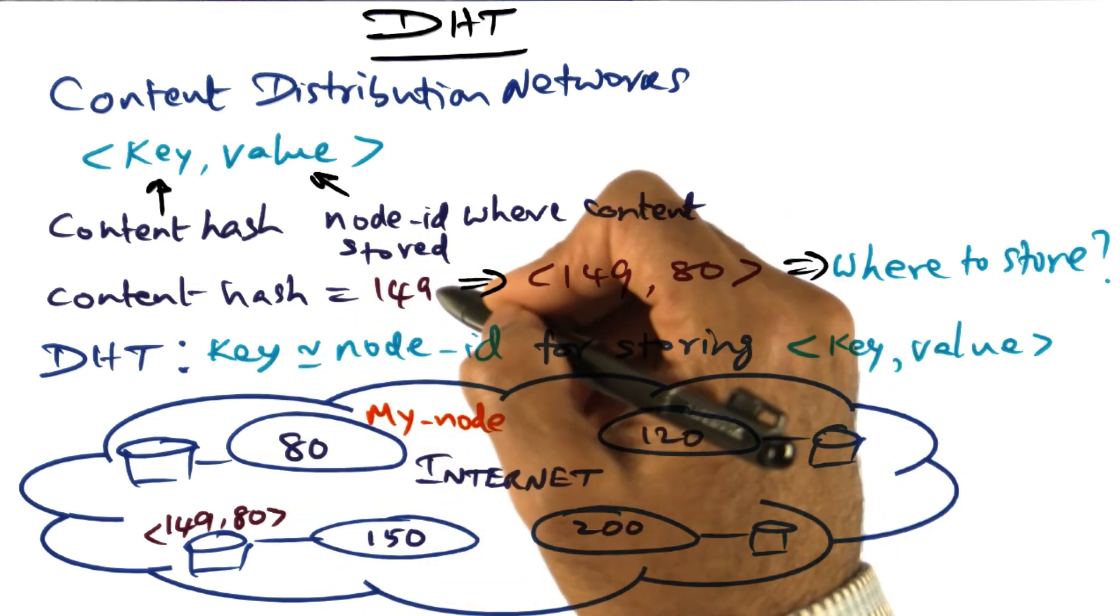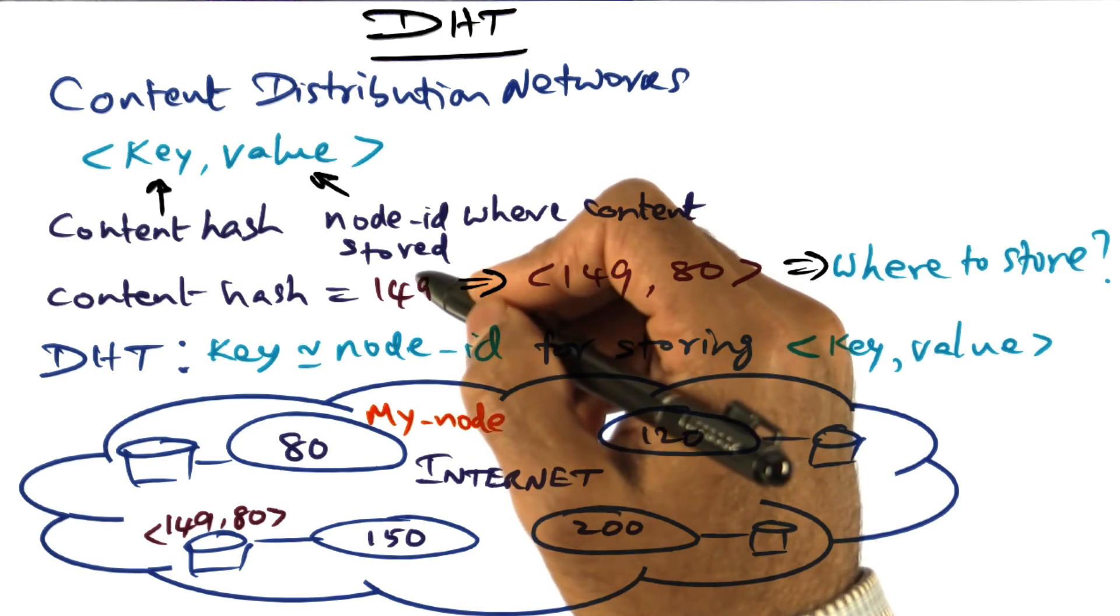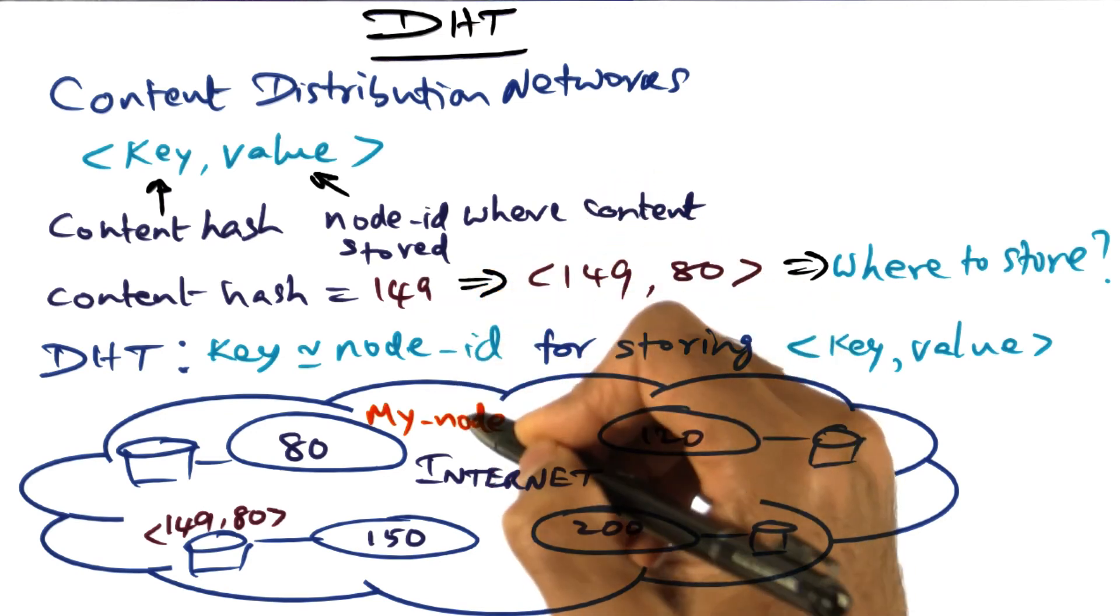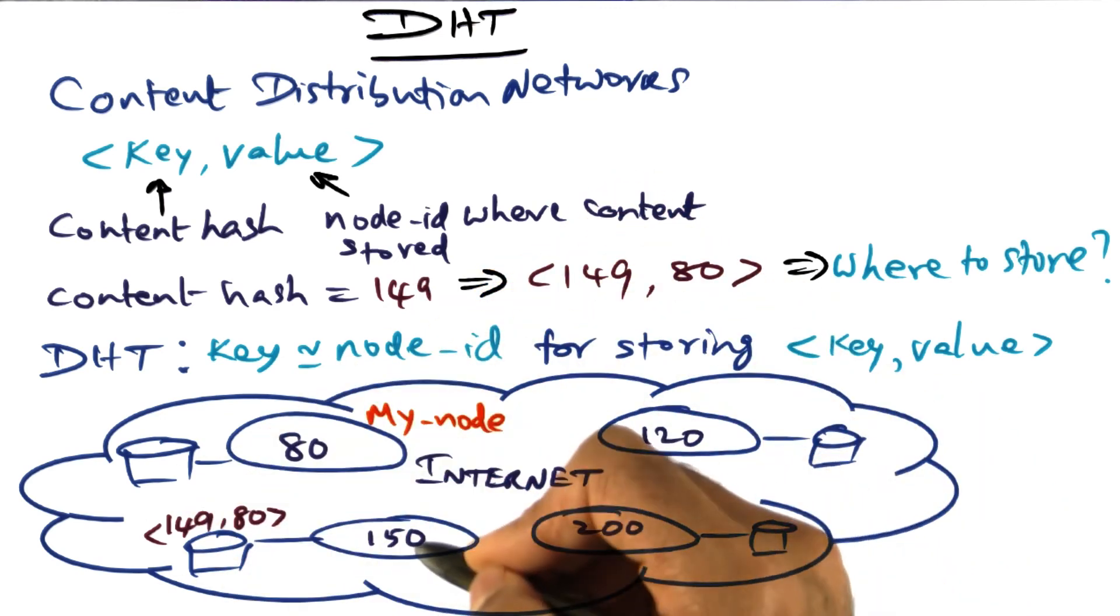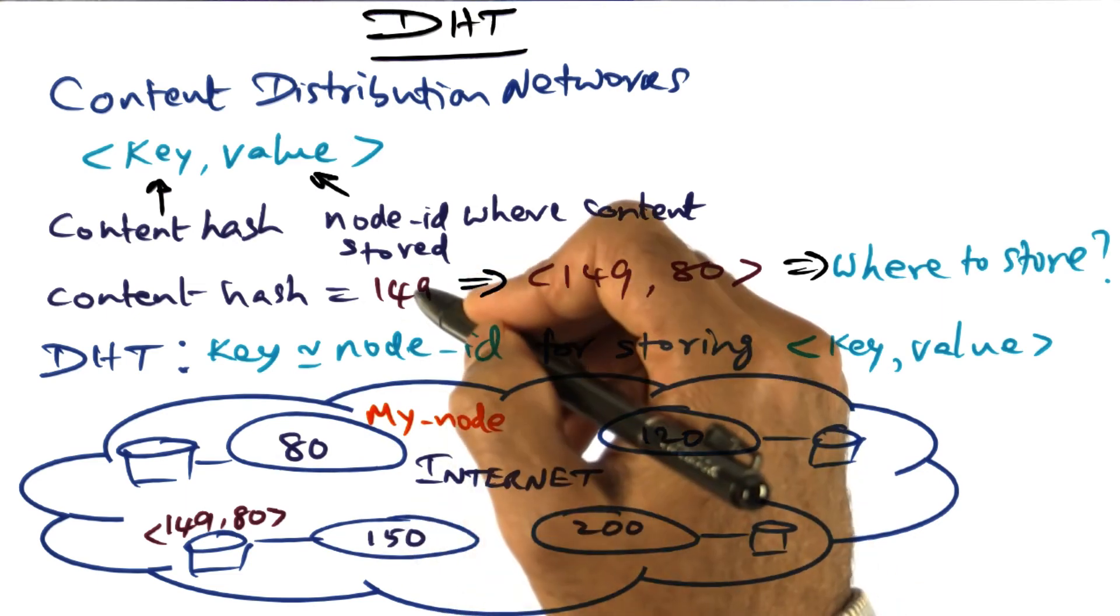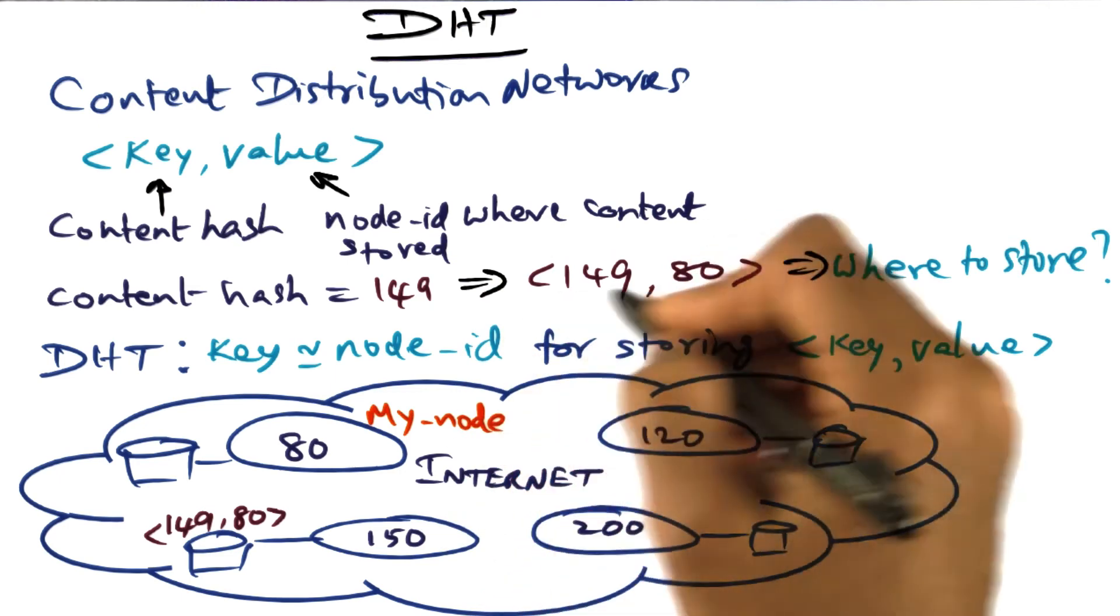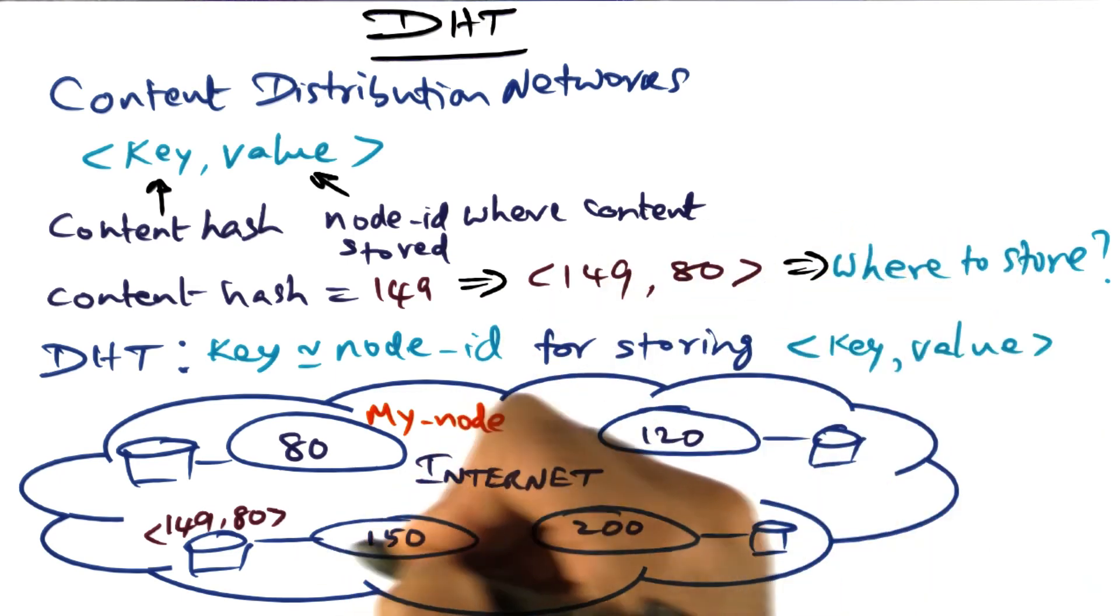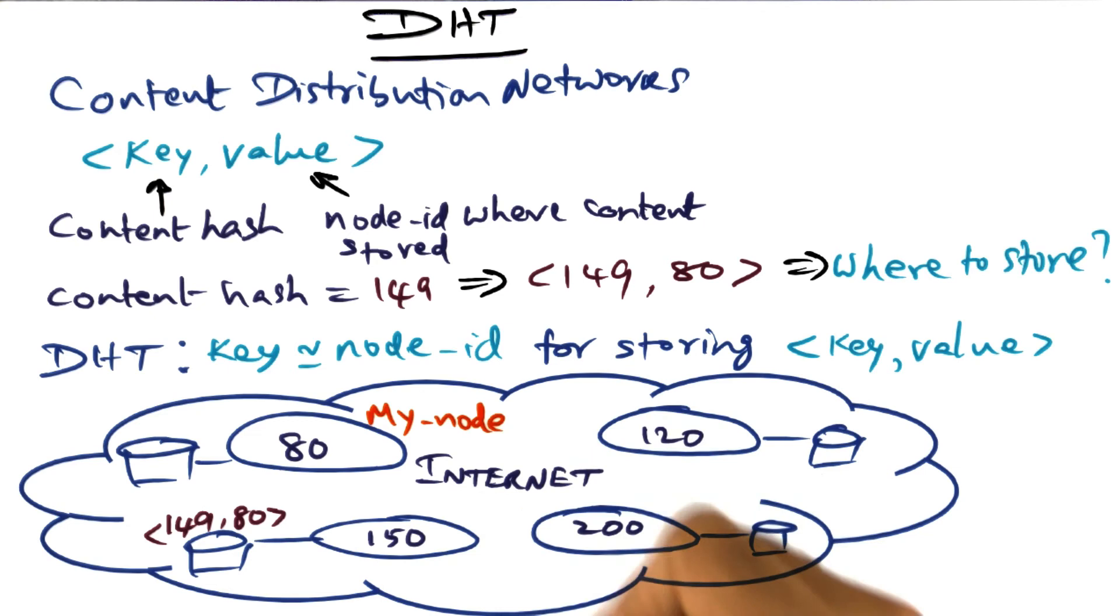So in this case, the key that I generated, which is the content hash of my India trip video, is 149. And looking on the internet, I find that there is a node whose node ID is 150, close enough to 149. And therefore, I'm going to store this key value pair 149 comma 80 in this particular node 150.